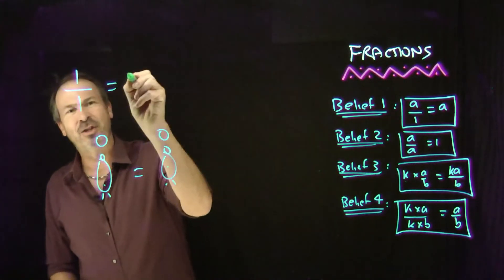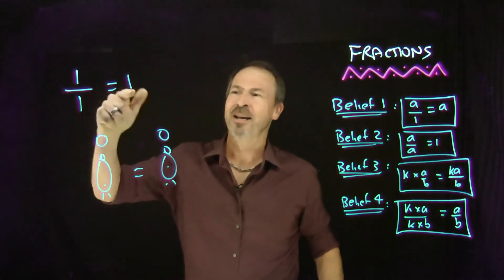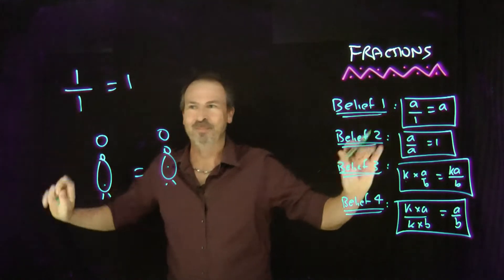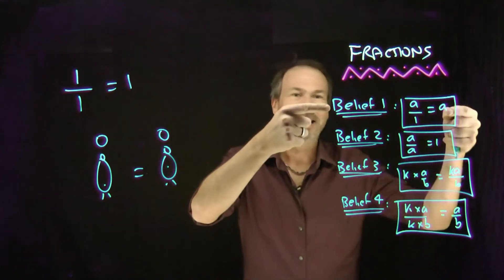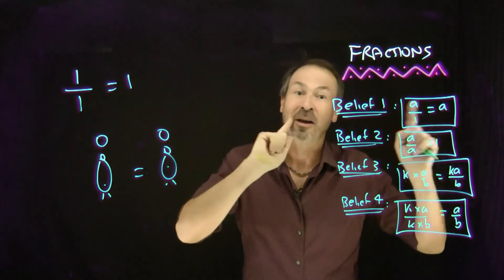Bingo. So people think this is straightforward. One pie for one student is obviously just one pie per student. Great. But if you've got that in your head, then I claim you don't actually need beliefs one and beliefs two to be listed on the board.